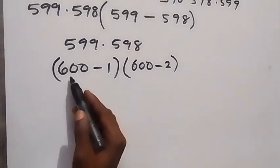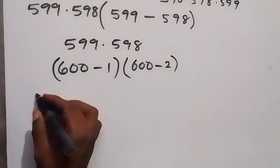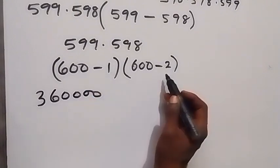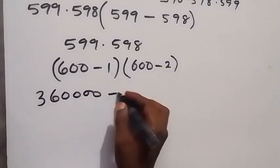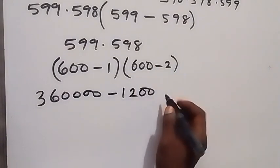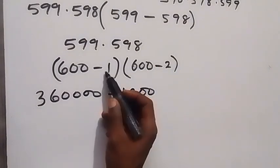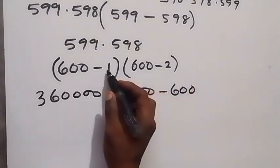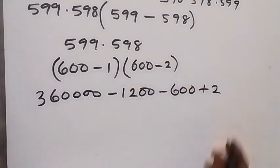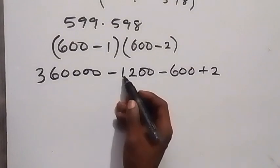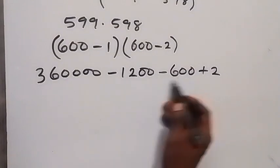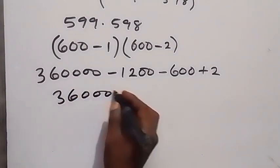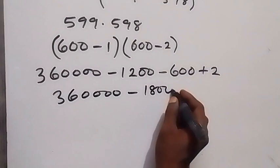Then we open this bracket. Use 600 to multiply the bracket first: 600 times 600 gives us 360,000, then 600 times 2 gives us minus 1200. Then use minus 1 to open the bracket: minus 1 times 600 is minus 600, then minus 1 times minus 2 is plus 2. From here we have minus 1200 minus 600, which gives us minus 1800.